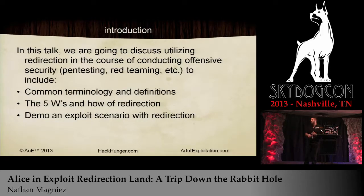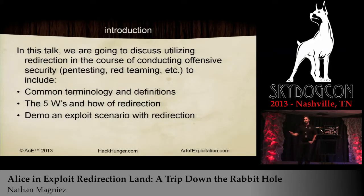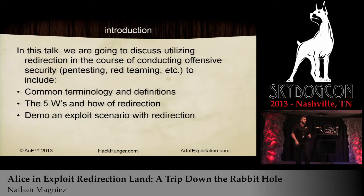In this talk, we're going to talk about some of the common terminology involved with redirection. There's a lot of different terms that get thrown around such as pivoting and jump points — we'll cover those. We're also going to talk about the five W's: who, what, when, where, and why of redirection, including how to do it, where to do it, and how to keep yourself anonymous. We'll also have a demo of an exploit scenario.